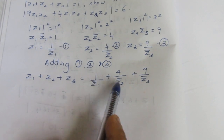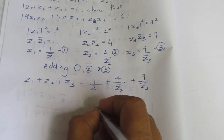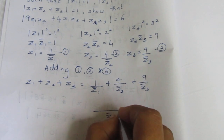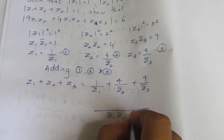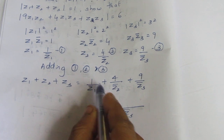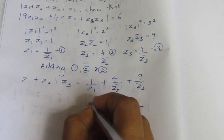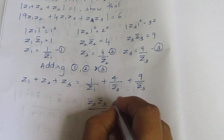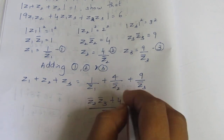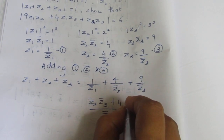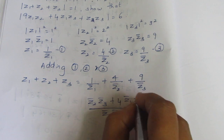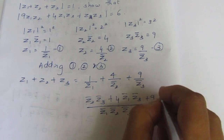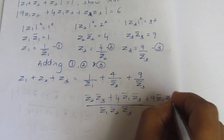LCM will be chosen from the denominator: conjugate Z1, conjugate Z2, conjugate Z3. Taking LCM we get: conjugate Z2 conjugate Z3, plus 4 into Z1 conjugate Z3, plus 9 into Z1 conjugate Z2.